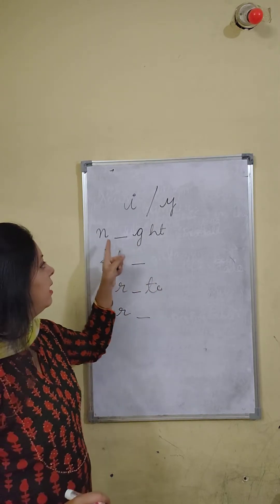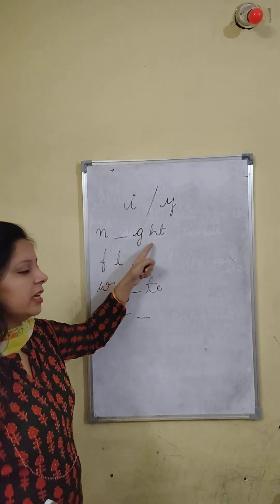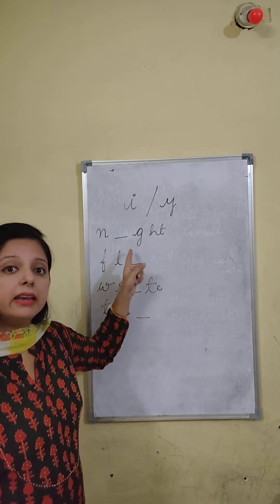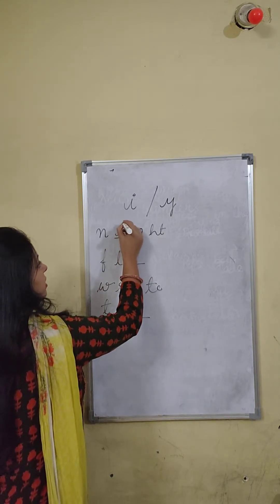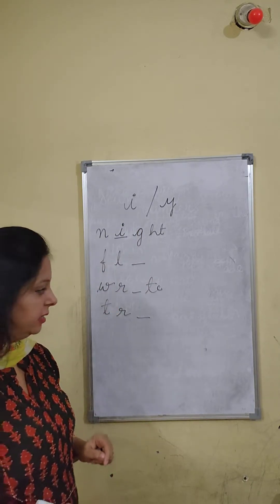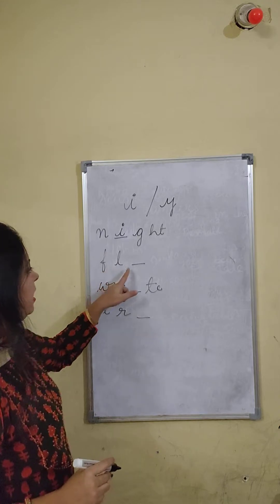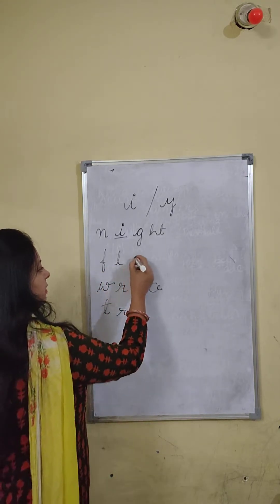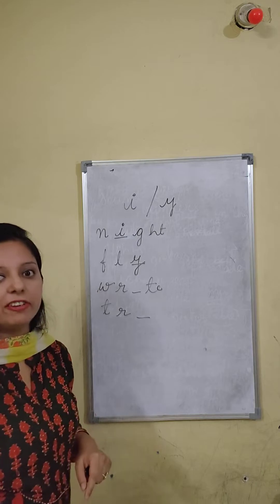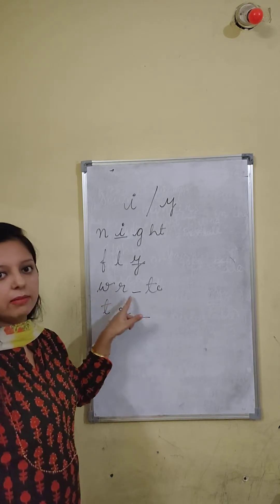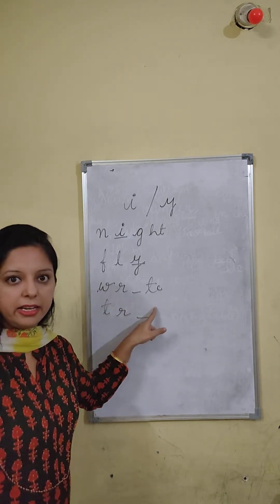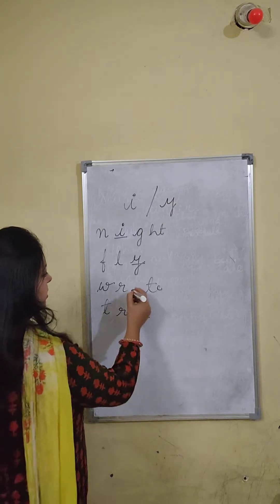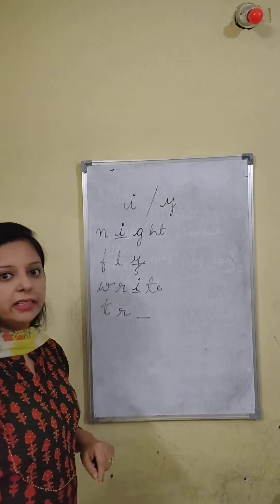This is 'knight' — N-Y-G-H-T or N-I-G-H-T? Yes, N-I-G-H-T is knight. F-L-I fly or F-L-Y fly? The correct answer is F-L-Y, fly. W-R-Y-T-E or W-R-I-T-E? The answer is W-R-I-T-E — write, likhna.